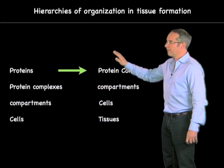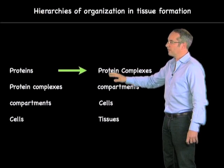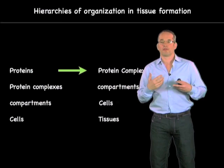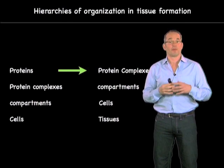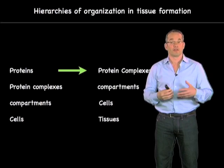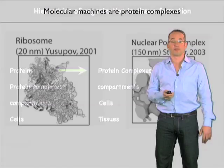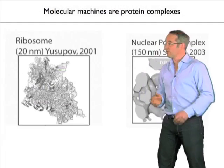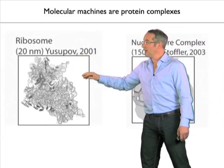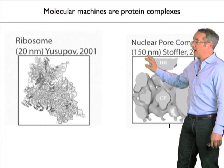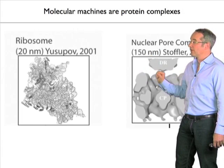That appears to be one of the first levels of organization under which proteins function in the cell. Most proteins appear to function in protein complexes with other proteins. And in fact, some of the protein complexes are very, very sophisticated, with many different proteins. The ribosome, for instance, has over 100 proteins. Here are some crystal structures of ribosomes and nuclear pore complexes, and molecular machines tend to be protein complexes that are very complex.